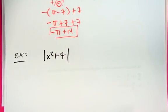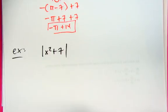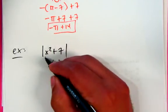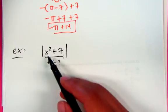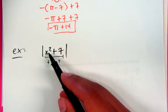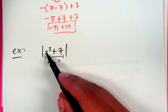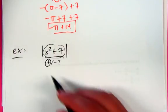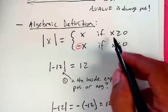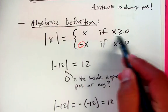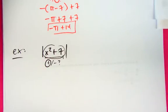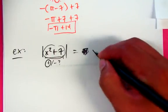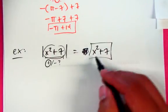Here's another scenario. Let's say we have the absolute value of x squared plus seven. Again, is this positive or negative inside? Well, x squared, no matter what — if I square it, it's going to be a positive value, since positive times positive is positive and negative times negative is positive. The only exception is zero, but regardless, this is always positive or zero. Since what's inside the absolute value is greater than or equal to zero, we just get rid of the absolute value and we're done.